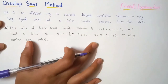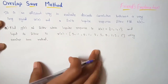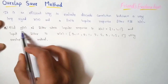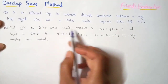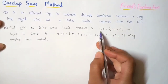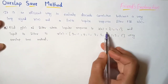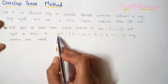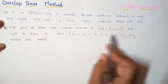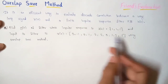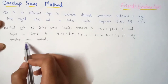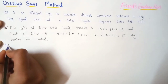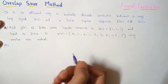This is the question we are going to solve today: find y(n) of the filter whose impulse response is h(n), and whose input is x(n), which is a very long signal, using the overlap save method. Let's write the answer.